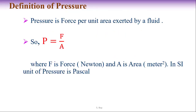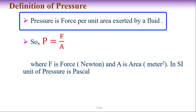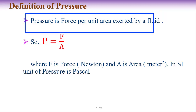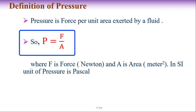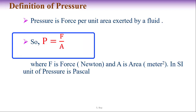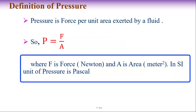What is the basic definition of pressure? Pressure is force per unit area exerted by a fluid. The equation of pressure is P equals F divided by A, where F is the force and A is the area. In the SI system, the unit of force is Newton, unit of area is meter squared, and the unit of pressure is Pascal.